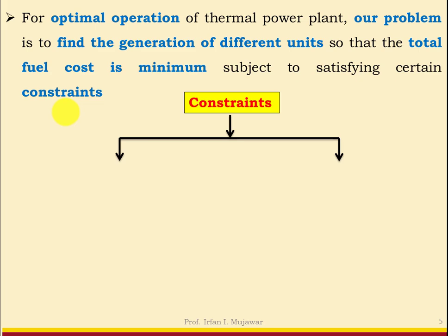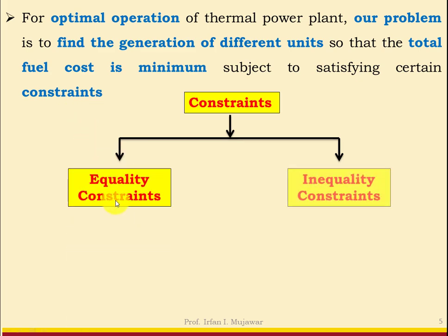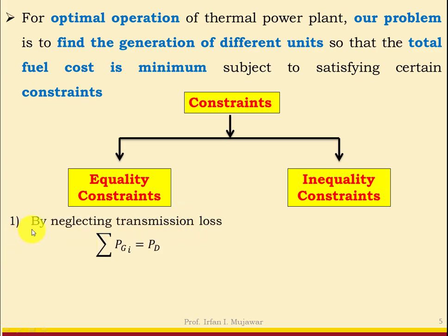There are two types of constraints: equality constraints and inequality constraints. For the equality constraint, by neglecting transmission loss, the summation of PGi equals PD. This means the summation of generation from all units should equal the total power demand or total power load.